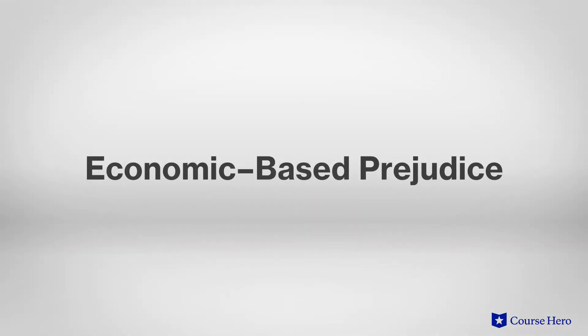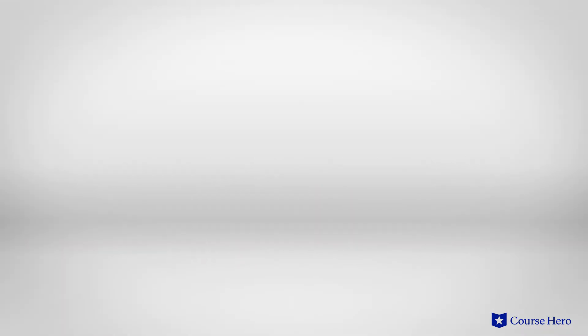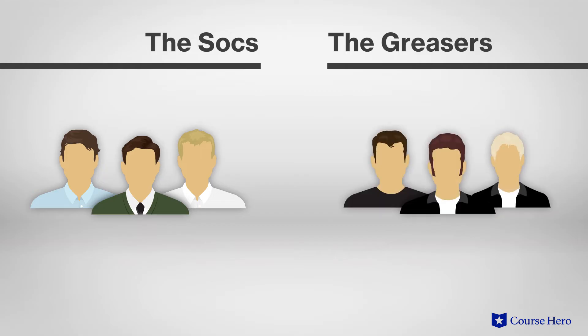Economic-based prejudice manifests itself in the differences between the wealthy socs and the underprivileged greasers in appearance, opportunities, and attitude. The socs dress well and have money. The impoverished greasers? Ponyboy says they're pretty decent guys underneath all that grease.